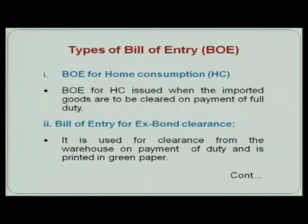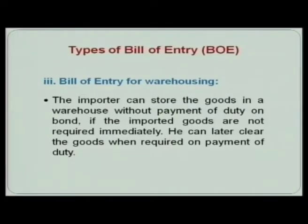The next category is the bill of entry for ex-bond clearance, used for clearance from the warehouse on payment of duty, printed on green paper. When the importer wants goods immediately, payment is made and goods are taken from the port — that is ex-bond clearance. The third type is the bill of entry for warehousing. If the importer does not require goods immediately, the goods can be stored in the warehouse without payment of duty on bond. A bond must be given; when the goods are required, the duty is paid, goods are cleared, and taken for internal consumption.